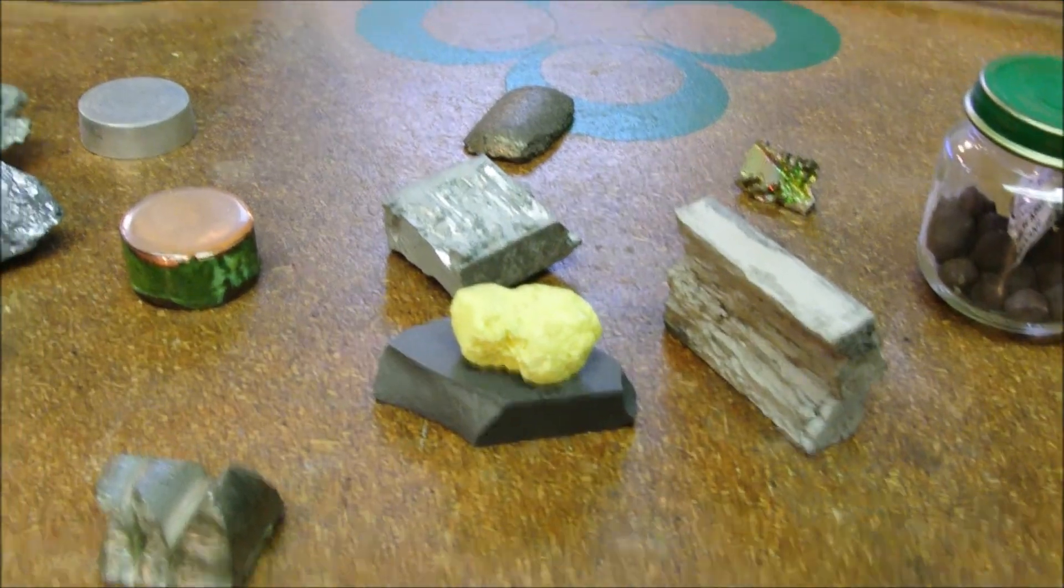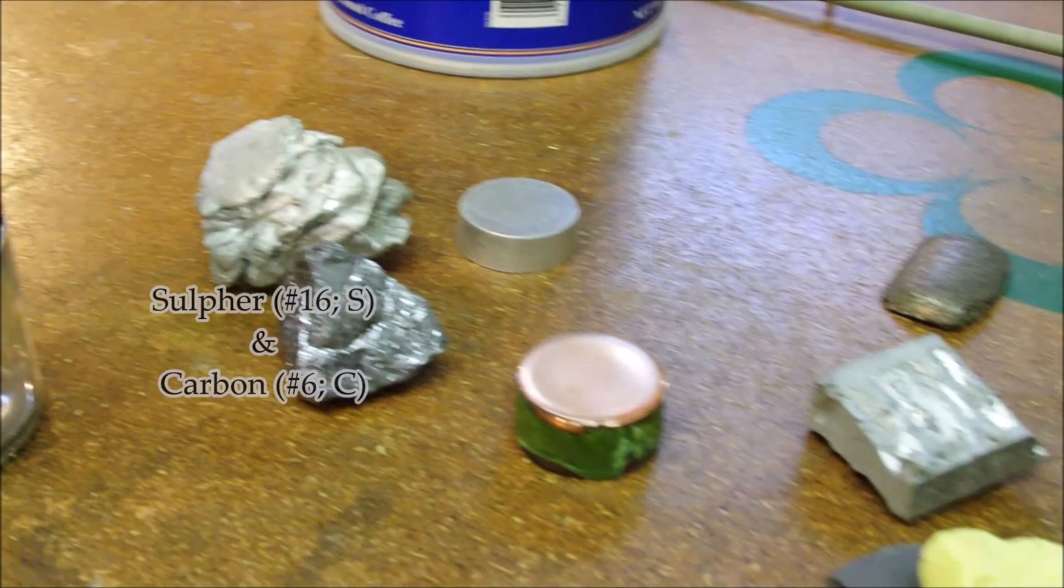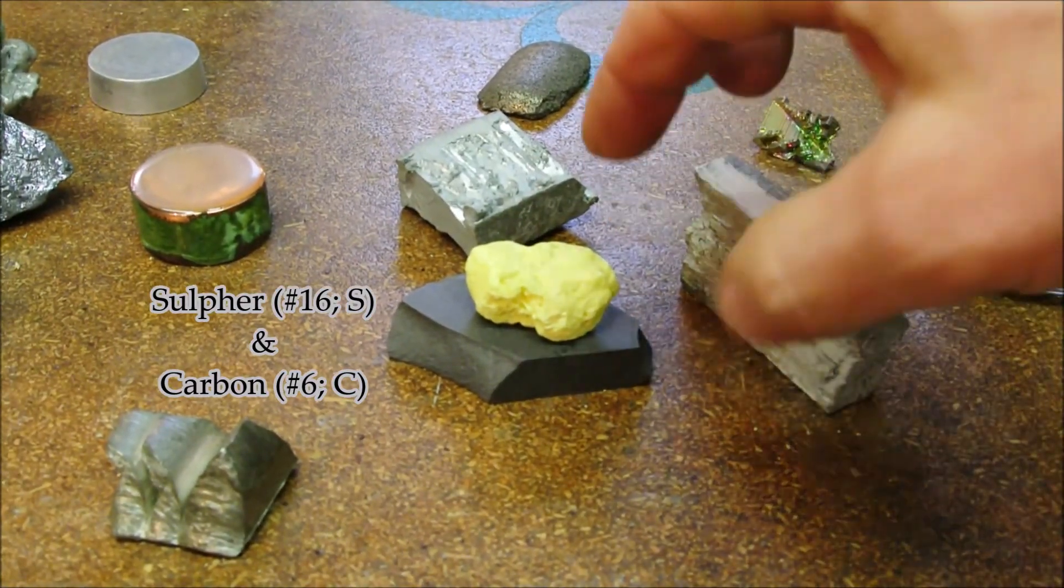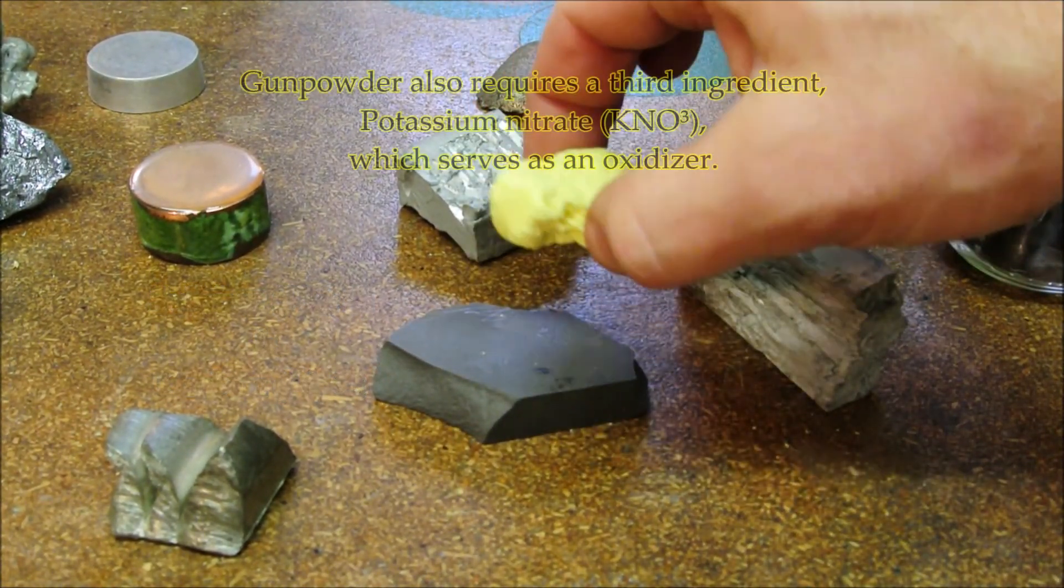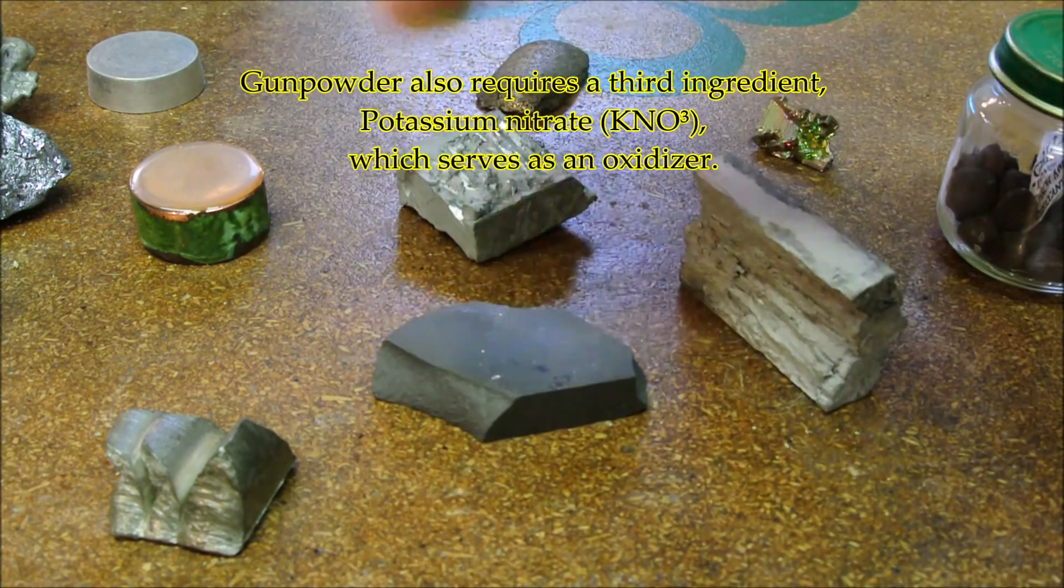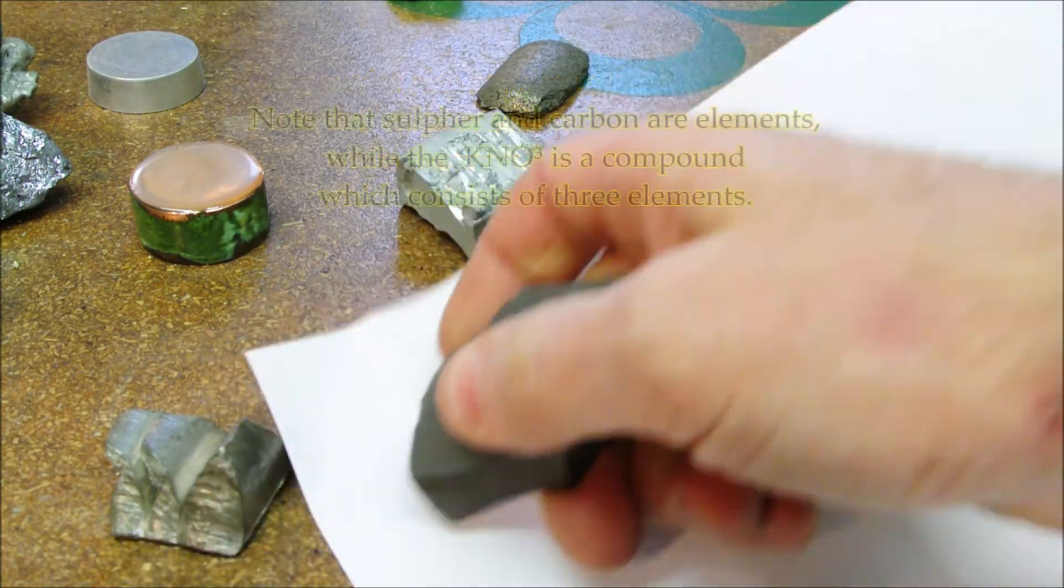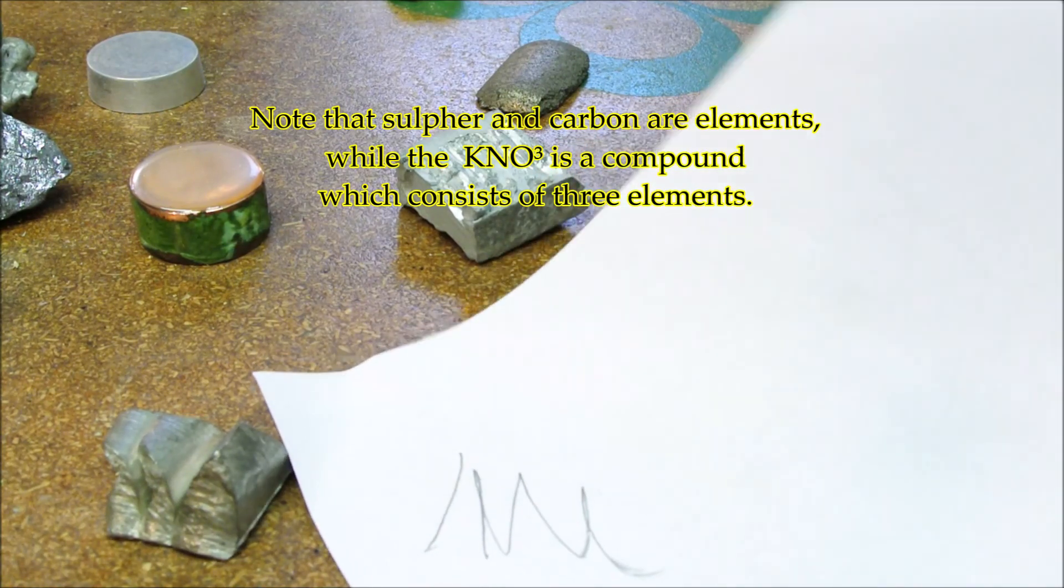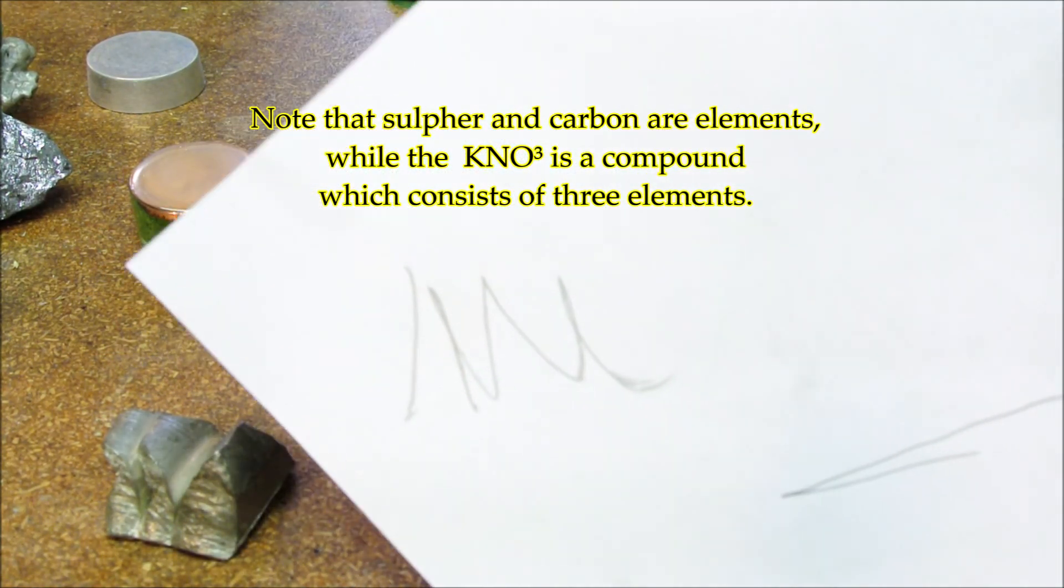Here are a couple of other elements that I've collected over the years. These two are the principal ingredients in gunpowder: sulfur, carbon, in this form some type of graphite.